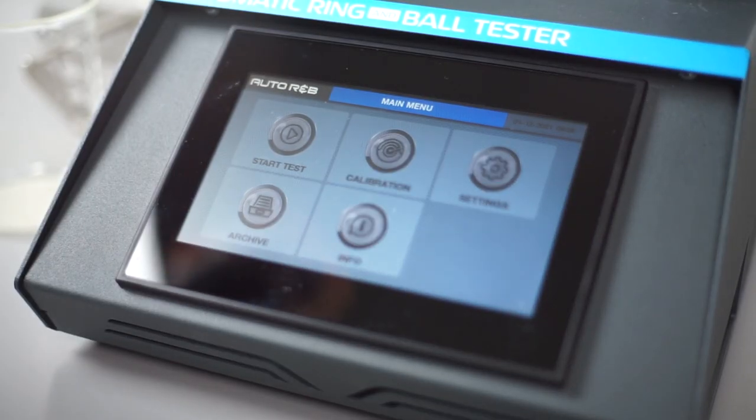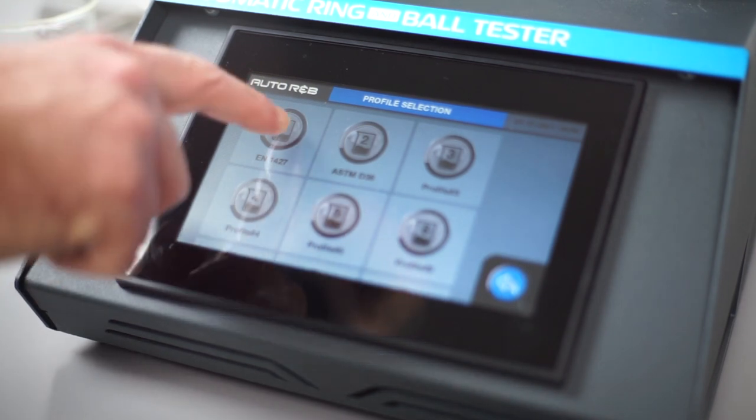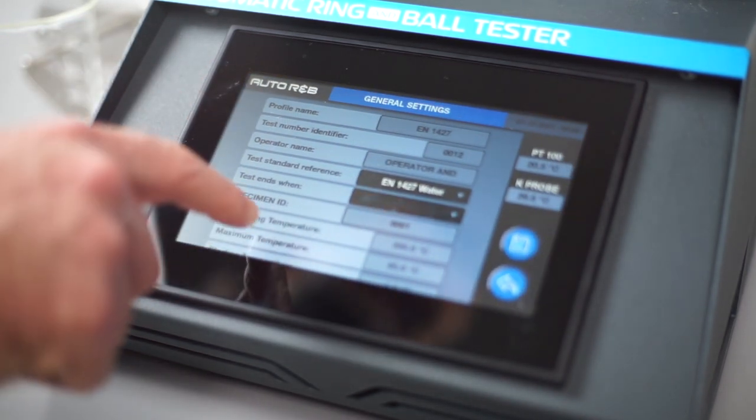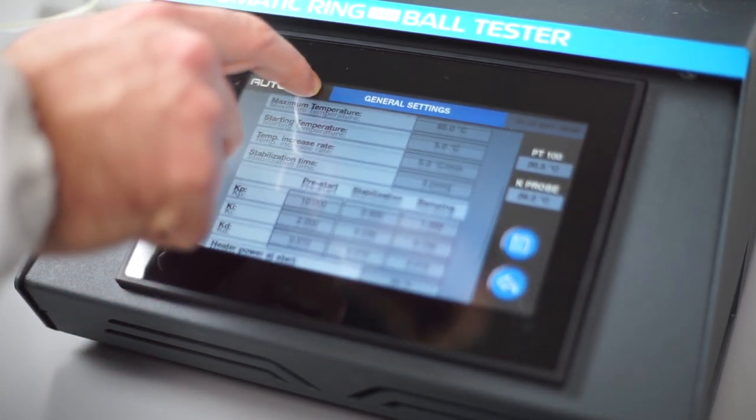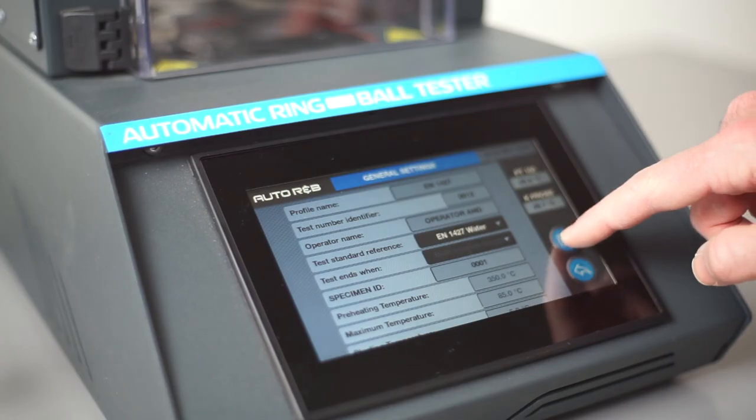Select start test and then select the required preset procedure from the procedure database. The choice depends on the reference standard and the required test liquid, water or glycerol. Test parameters can be edited if needed.